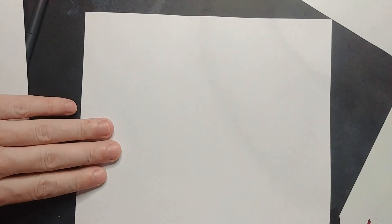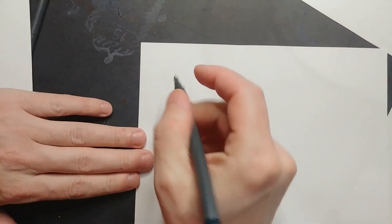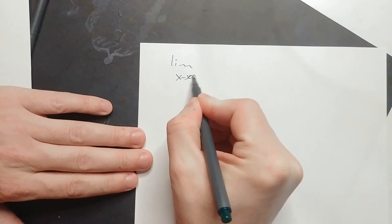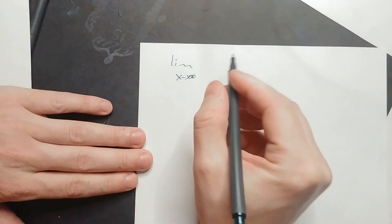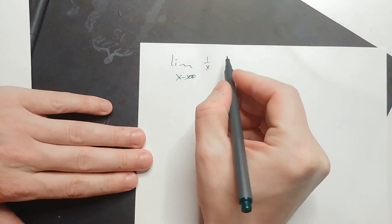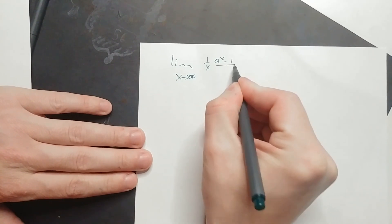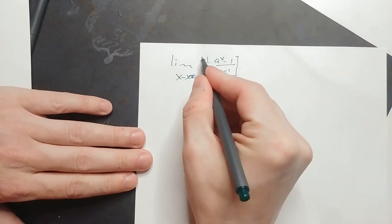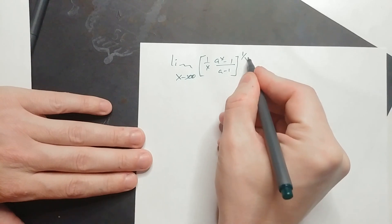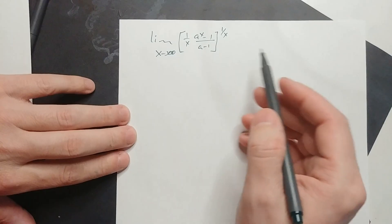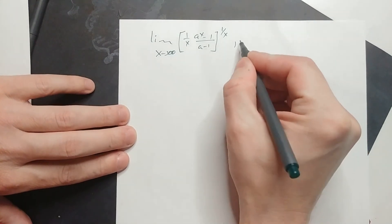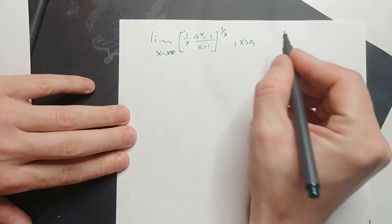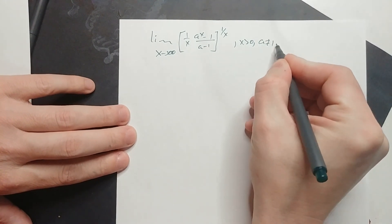Here we have a nice Putnam question. It says: the limit as x approaches positive infinity of 1 over x times (a to the x minus 1 over a minus 1), all raised to the 1 over x. We're given a couple of conditions: x is greater than 0, and a does not equal 1.